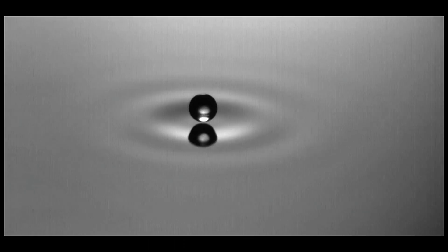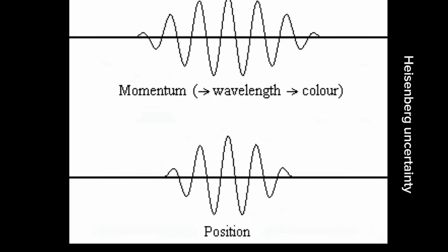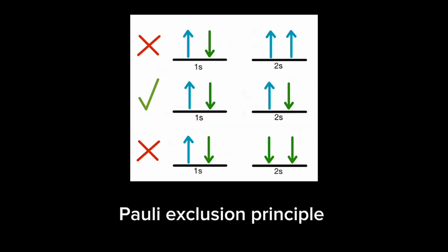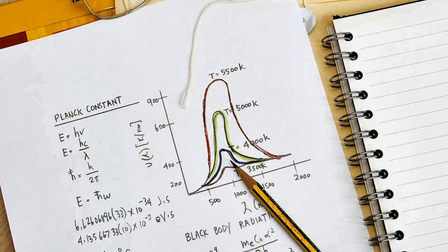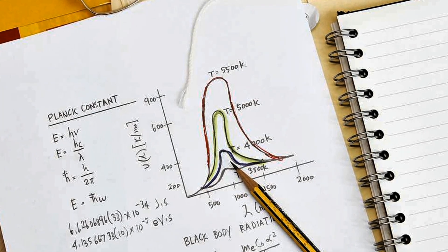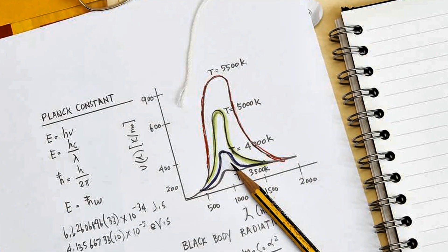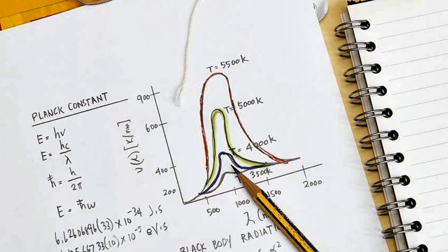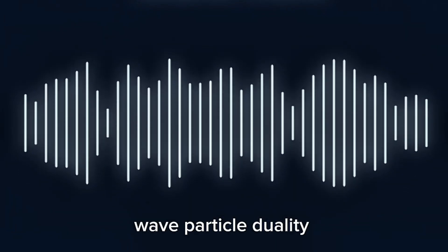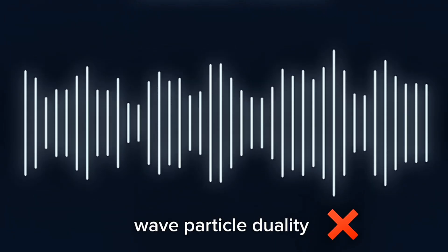It does not explain the wave-particle duality of the electron or other quantum mechanical things like the Heisenberg uncertainty principle, Pauli's exclusion principle, Planck's constant, and everything on which quantum mechanics stands. This simple thing—that the electron behaves as a particle and a wave, the wave-particle duality—is not even explained by this model because it is classical.